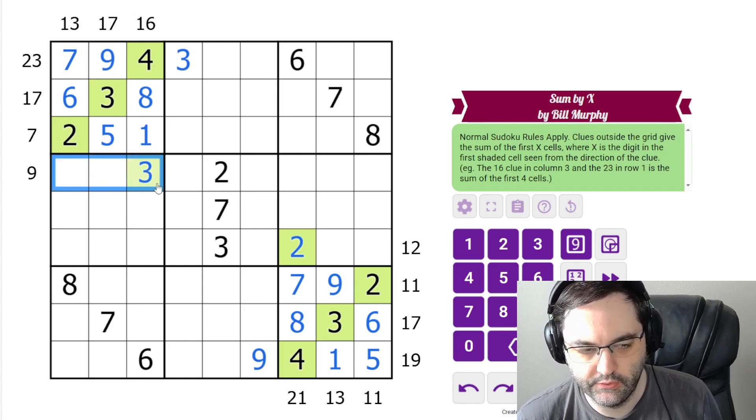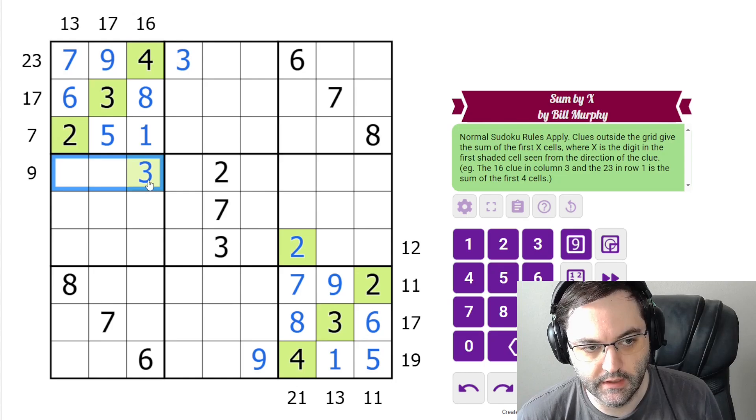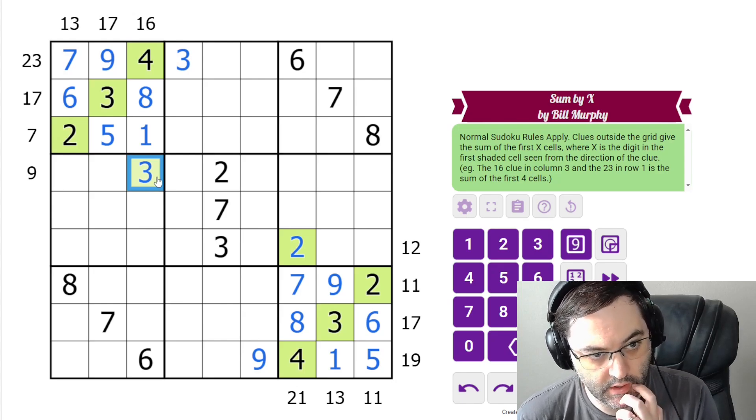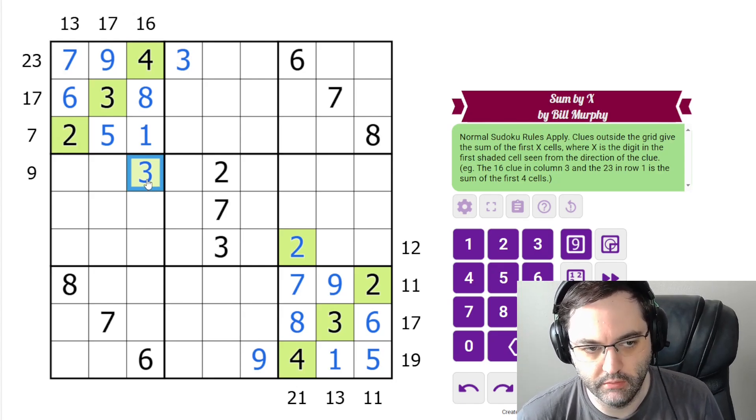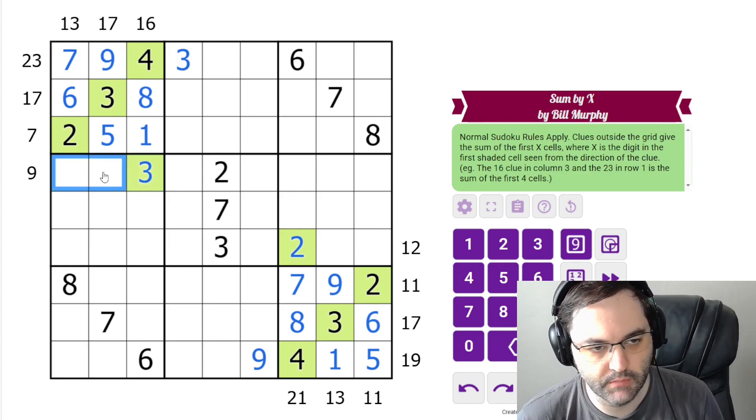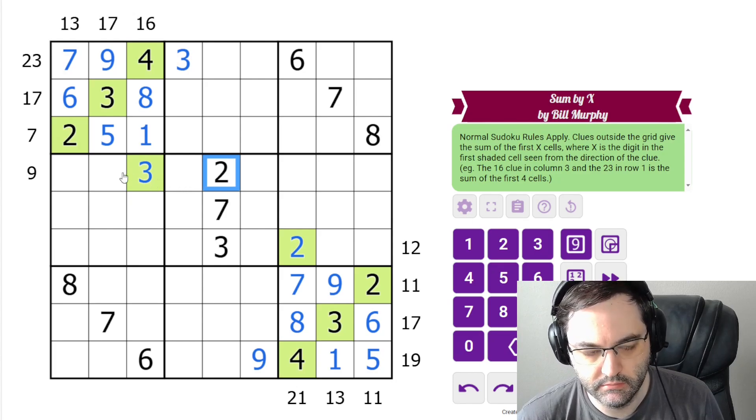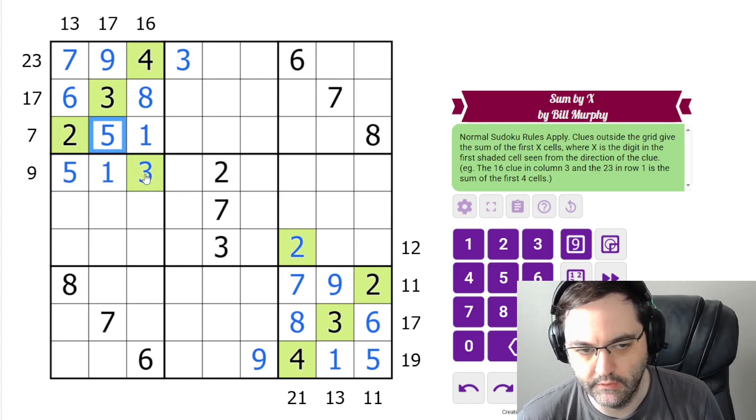Now this 9 is telling us the first three cells here sum to 9. There are two ways to do that in three cells containing a 3. This is something that you might pick up doing XSums. Those are 3, 1, 5, and 3, 2, 4 because we need 6 in the other two cells. It can't be 2, 4, so it must be 1, 5 in this order because of the 5.